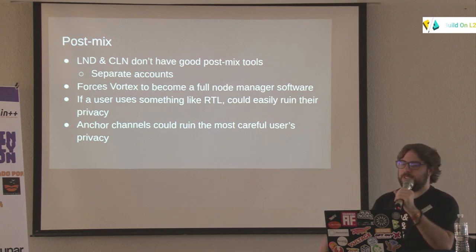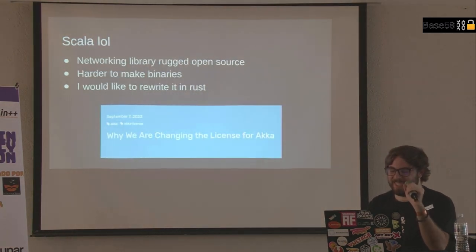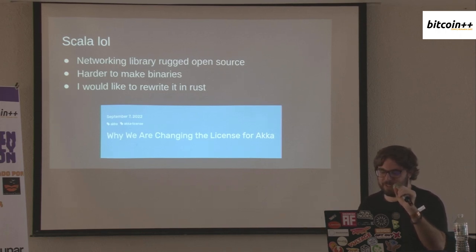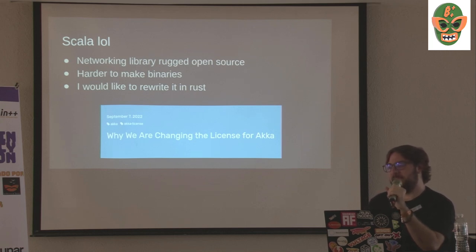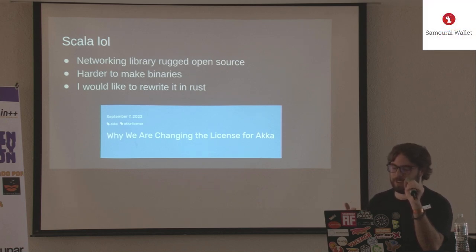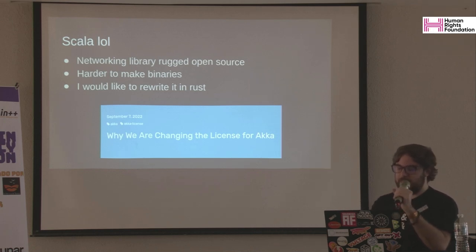Contributing to RTL means writing JavaScript, which is something to avoid. Another problem is Vortex was written in Scala, and the main library it's built on just changed its license to no longer be open source. That library is the main networking library basically every Scala project uses. And it doesn't have support for mutual TLS, which is needed for Core Lightning's gRPC. Even if they add support, upgrading to the latest version isn't possible because of the license change. Scala is also hard to produce releasable binaries for every platform, so a rewrite in Rust is something to consider.